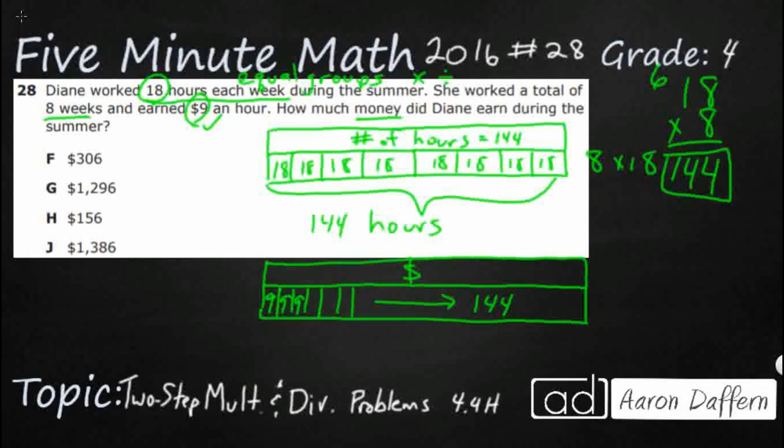So she's going to work 144 hours. For every single hour she works, she's going to earn nine dollars. So really what we have are 144 groups of nine. So let's see, 144 hours times nine dollars an hour. That's going to be 36, it's another 36, add that three, it's going to be 39. Nine times one is going to be nine, add that three, twelve.